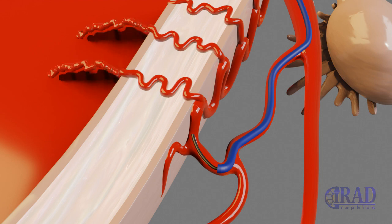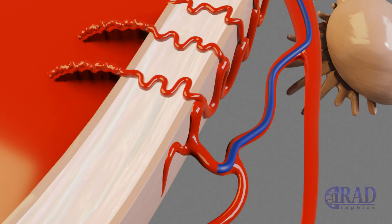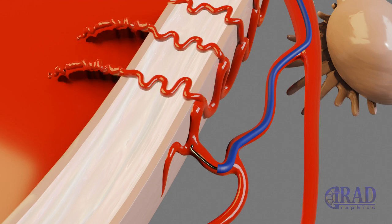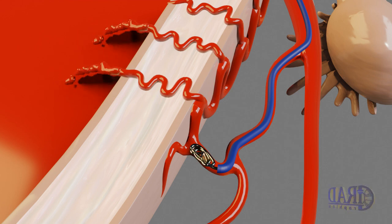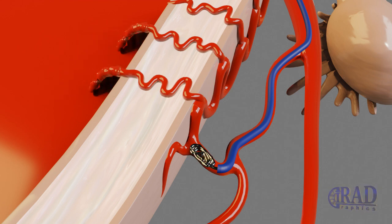Once the bleeding area is identified, the bleeding artery is occluded with coil or embolized with particles, which stops the bleeding.